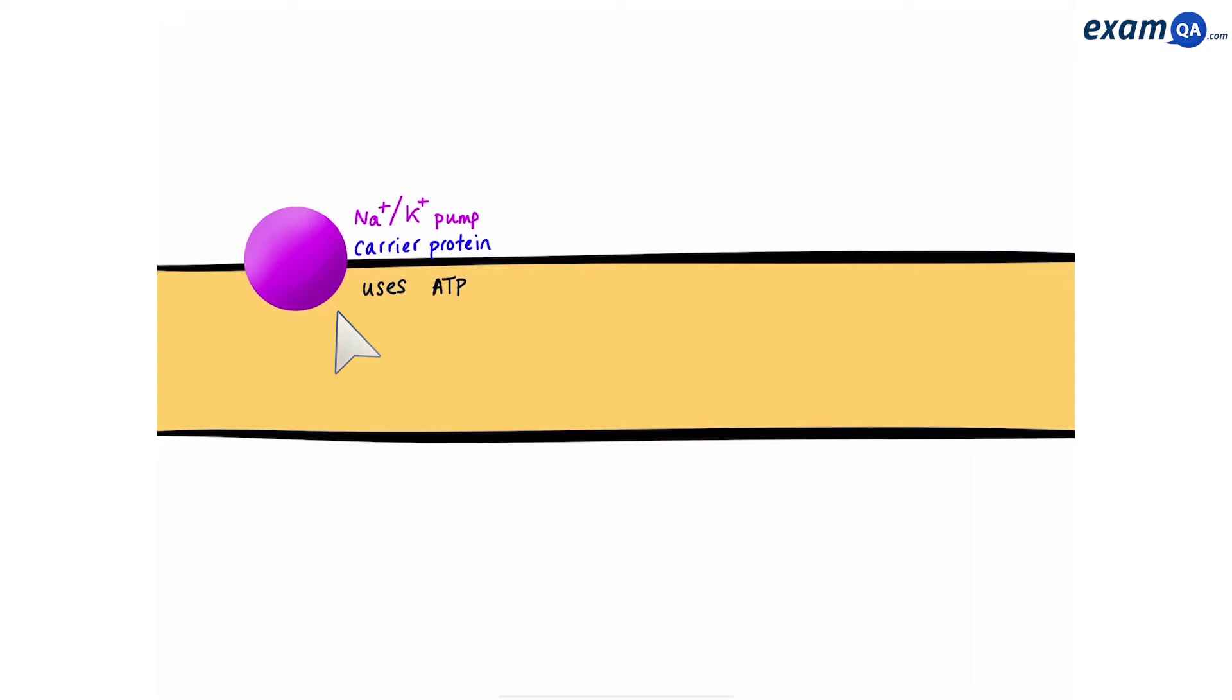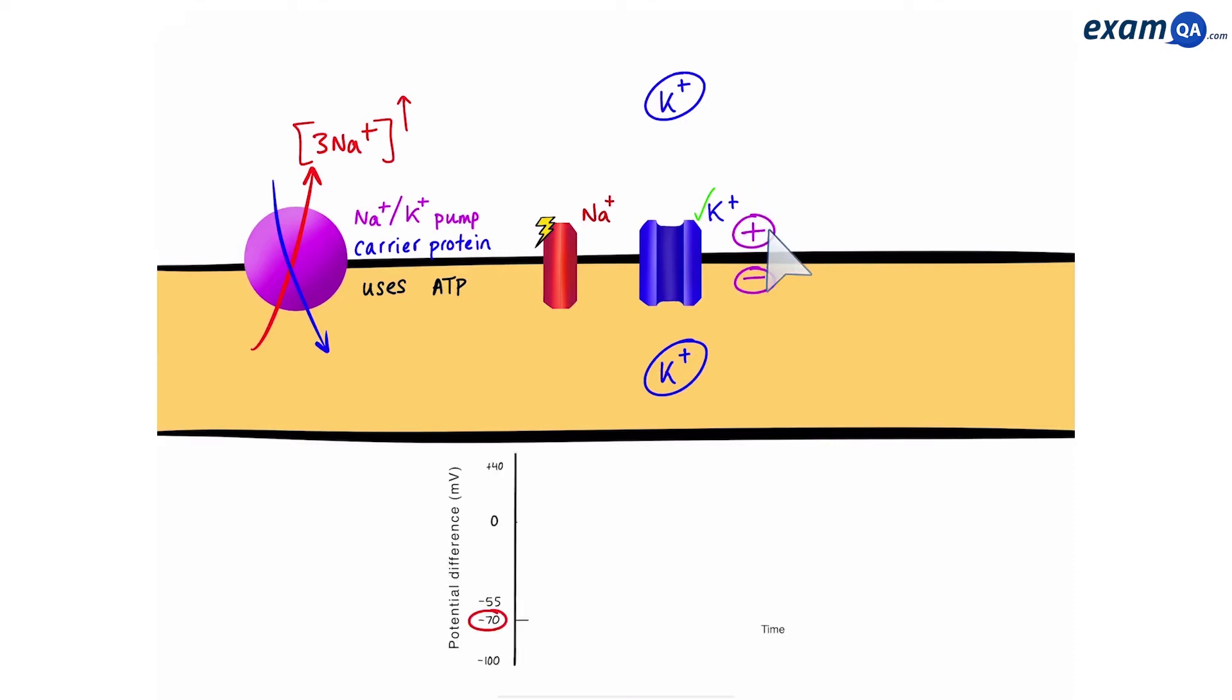The sodium-potassium pump pumps out three sodium ions and pumps in two potassium ions. The sodium ion channel is closed, meaning that sodium ions stay outside and their concentration builds up outside. The potassium channel is open, so that means some potassium ions will be able to leave, which will evenly distribute the potassium inside and outside. Overall, we said the outside is going to be more positive than the inside. And on our graph, the resting membrane potential is minus 70 millivolts.